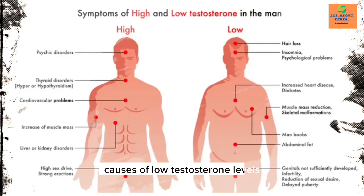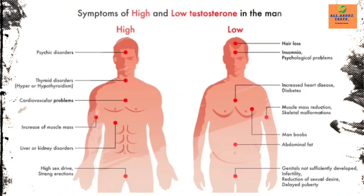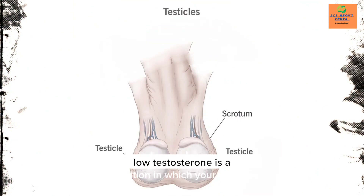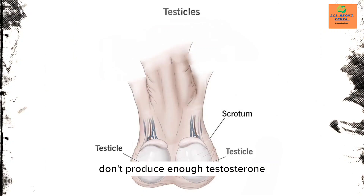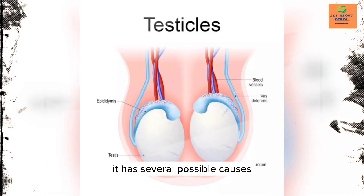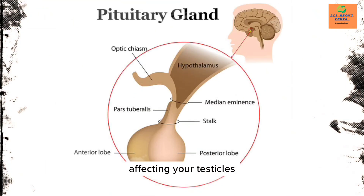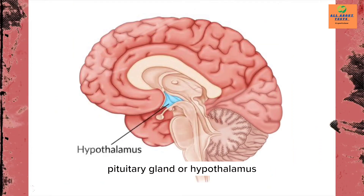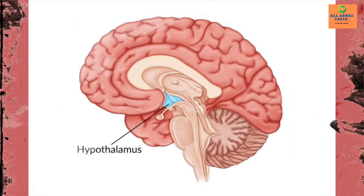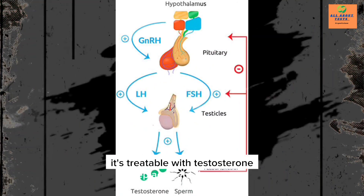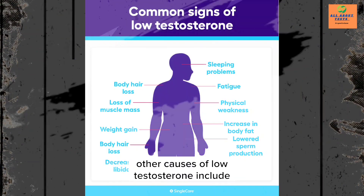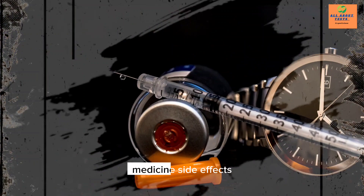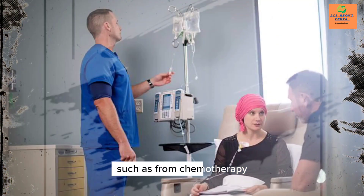Causes of low testosterone: Low testosterone is a condition in which your testicles don't produce enough testosterone. It has several possible causes, including conditions or injuries affecting your testicles, pituitary gland, or hypothalamus. It's treatable with testosterone replacement therapy. Other causes include medicine side effects, such as from chemotherapy.